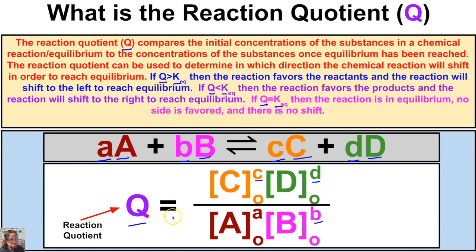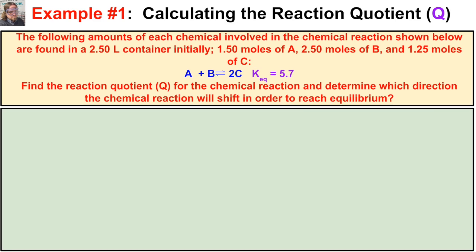We can apply this concept of Q to chemical reactions and compare our Q value to the equilibrium constant to determine which way the reaction will shift. In our first example, the following amounts are found in a 2.50-liter container initially: 1.50 moles of A, 2.50 moles of B, and 1.25 moles of C.